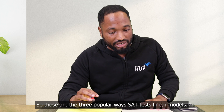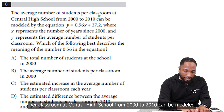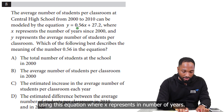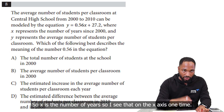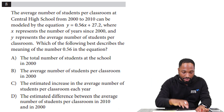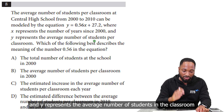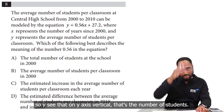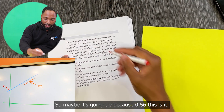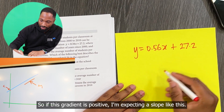First example: the average number of students per classroom at Central High School from 2000 to 2010 can be modeled using an equation where x represents the number of years since 2000 — that's on the x-axis — and y represents the average number of students in the classroom — that's on the y-axis.